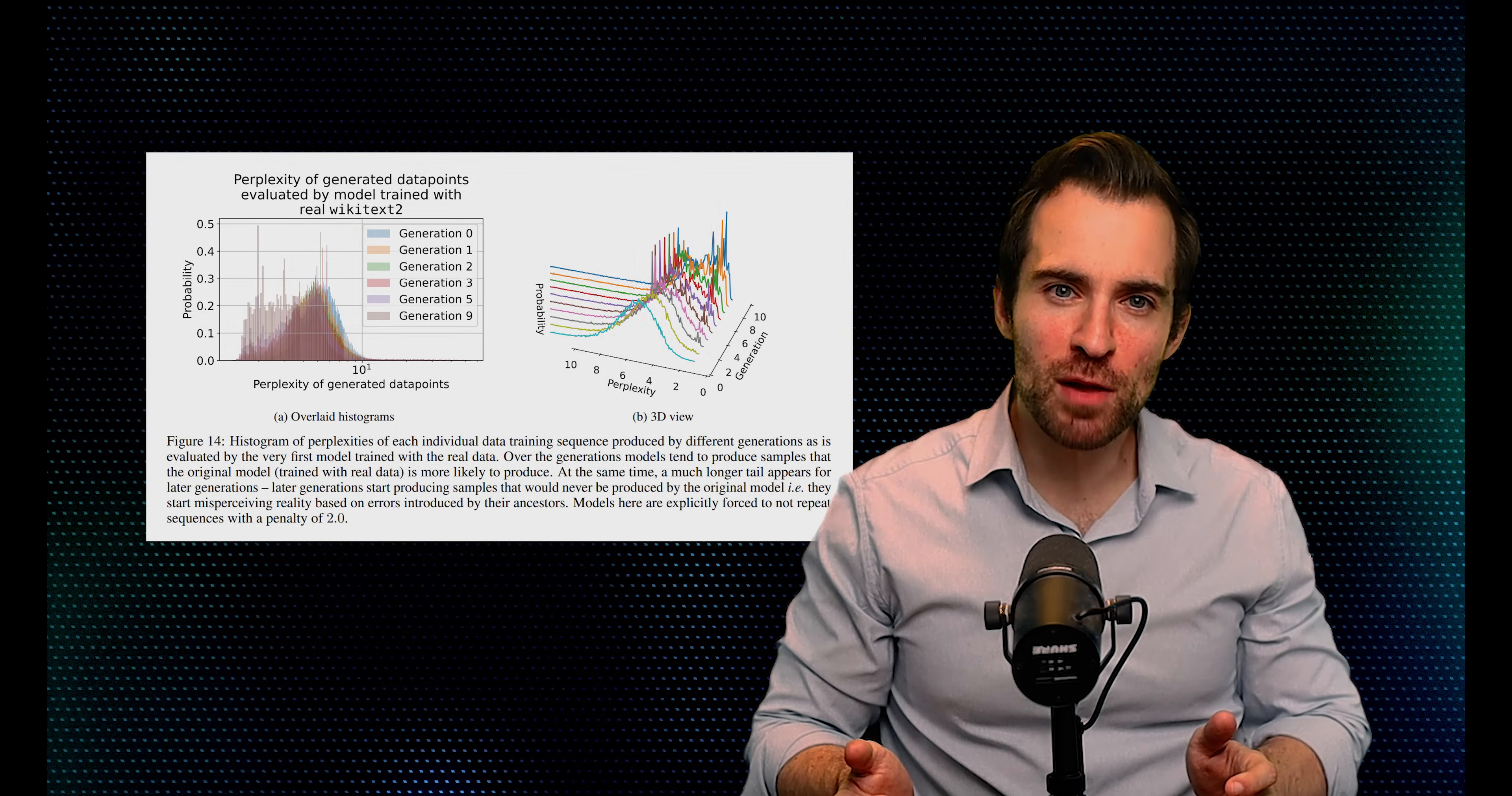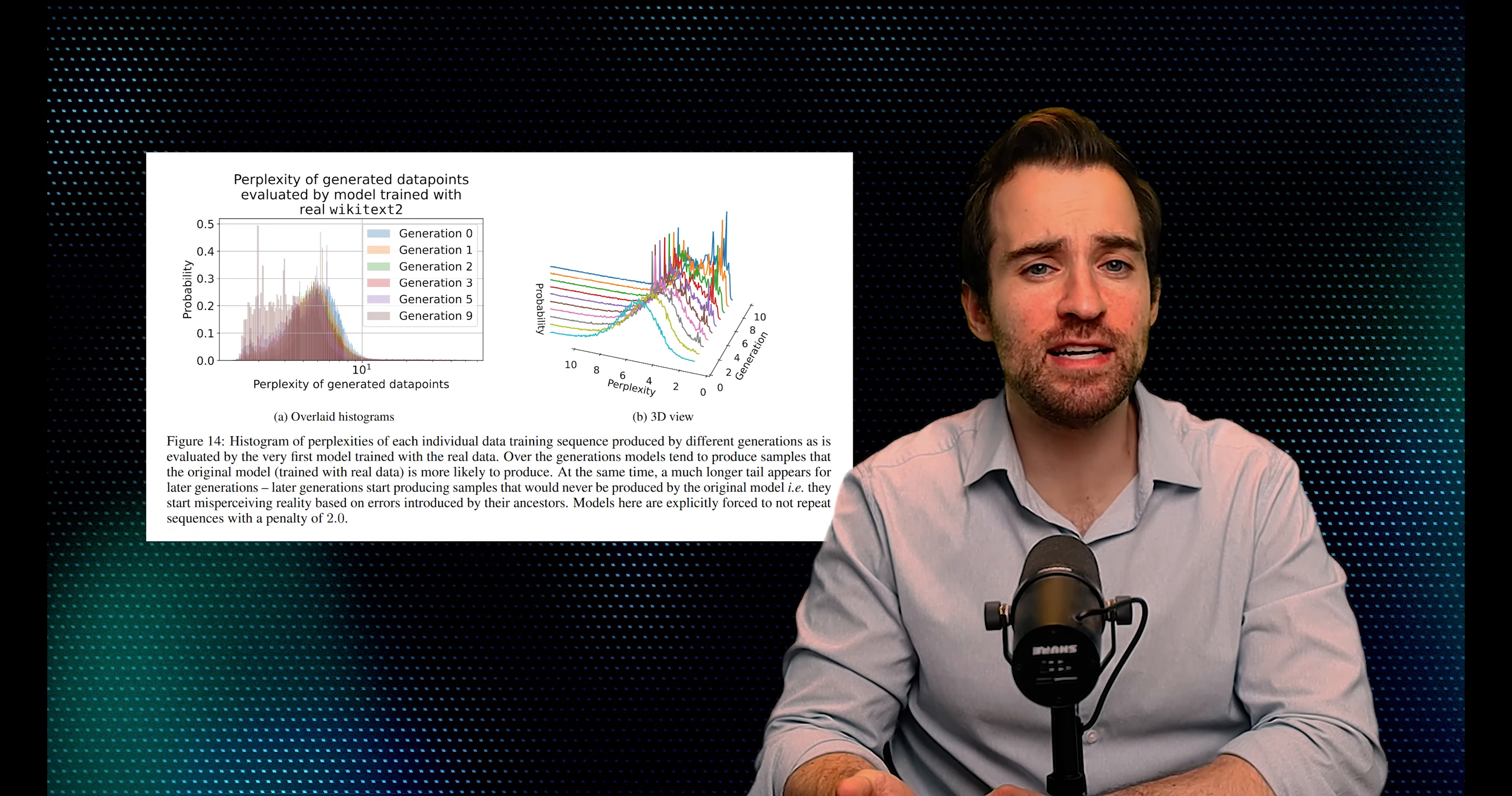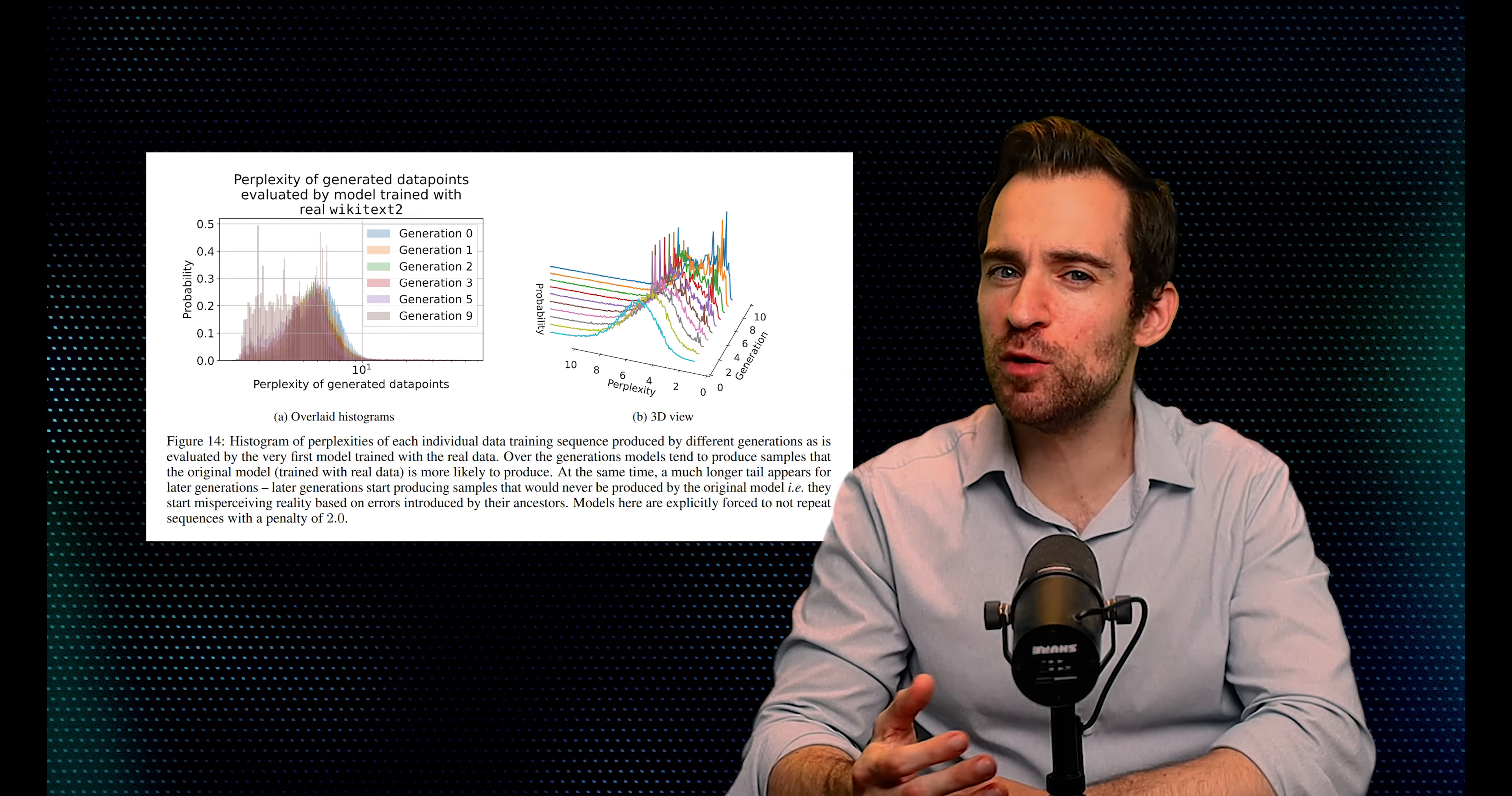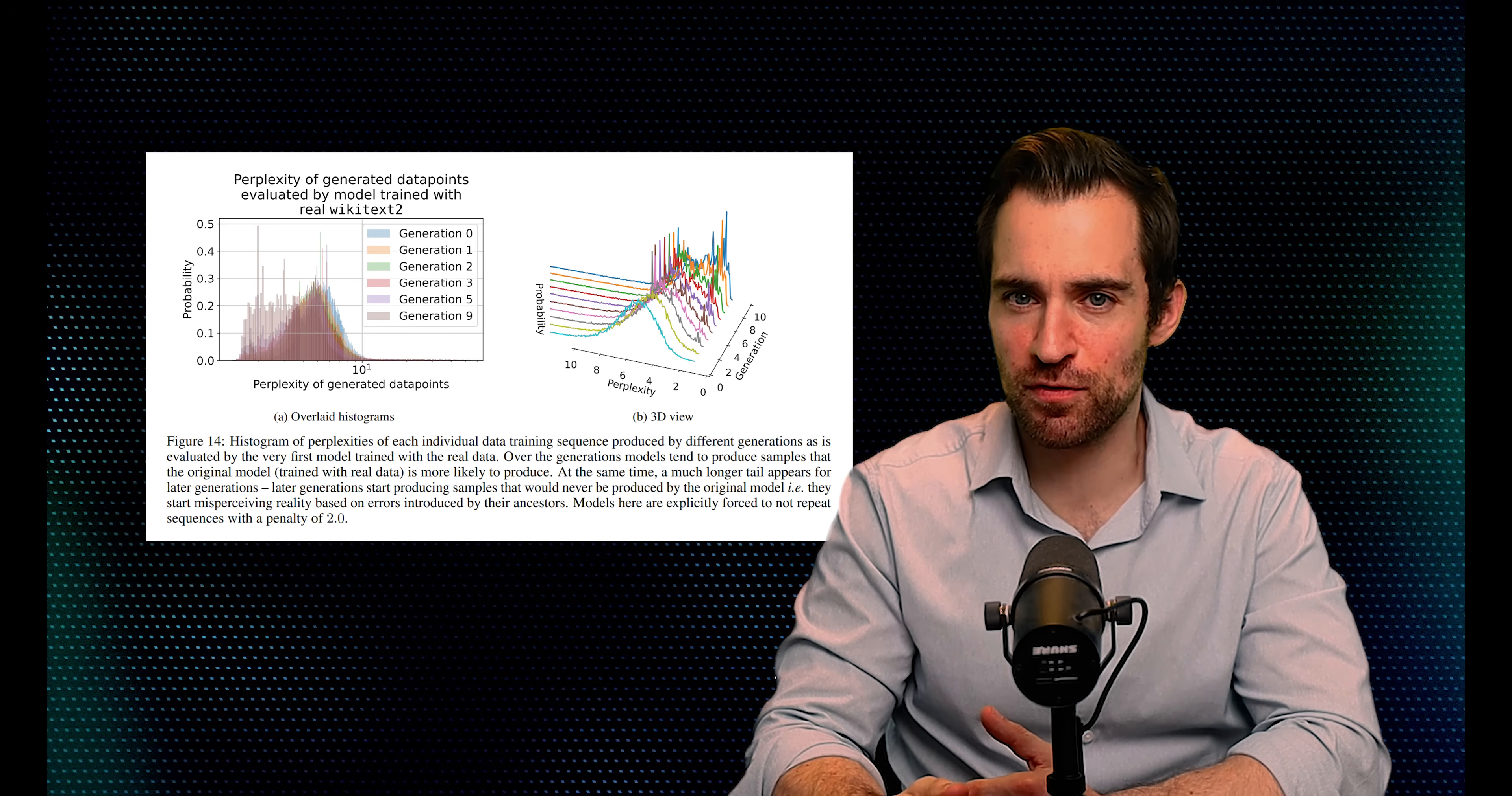Another idea is to just directly correct for the problem. If the problem is that the AI generated data is too concentrated, then let's just reweight that data such that it maintains the spread from the original real-world distribution. Well, that might help, but this will be limited by how good our measure of variability is. In other words, that measure will be imperfect, so the solution will also be imperfect.